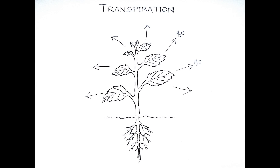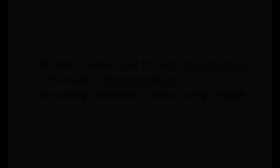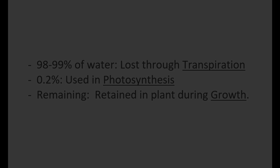Transpiration is an important physiological phenomenon found in plants whereby they lose water in the form of water vapor from the aerial parts and into the atmosphere. About 98 to 99% of the water absorbed by a plant is lost through the process of transpiration. Hardly 0.2% is used in photosynthesis while the remaining is retained in the plant during growth.